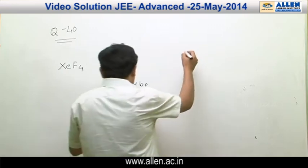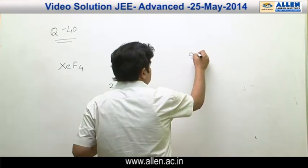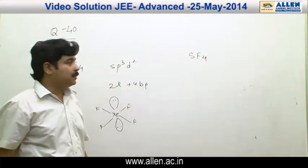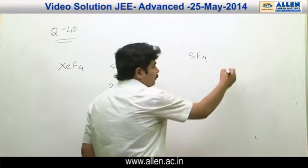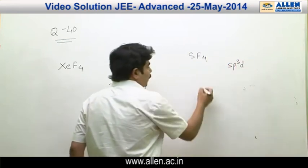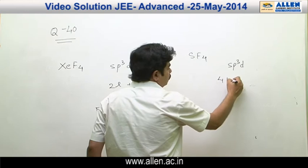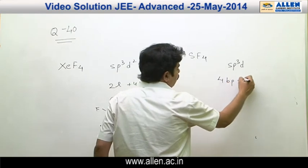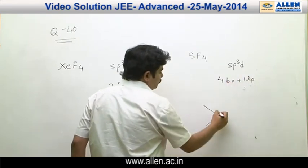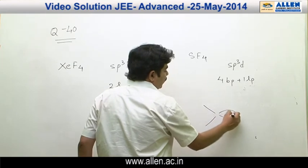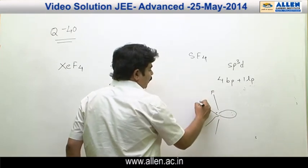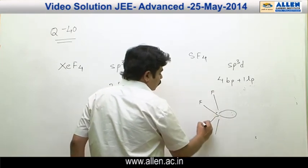Another option is SF₄. The hybridization of SF₄ is SP³D, having 4 bond pairs and 1 lone pair. Therefore, its geometry is seesaw.